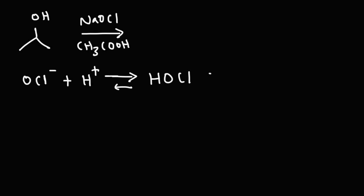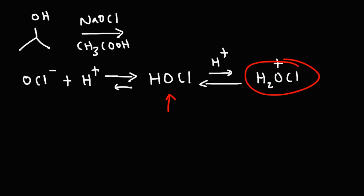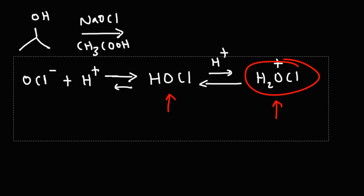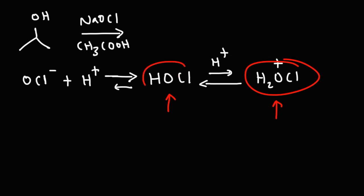Upon reacting with additional acid, the hypochlorite can turn into H2OCl+. Notice that the majority of OCl− will be in the HOCl form; only a very small amount will be in the H2OCl+ form because that form is not very stable. However, H2OCl+ is going to be the reactive intermediate we focus on in this reaction. HOCl is a weak acid, but H2OCl+ is a strong acid.